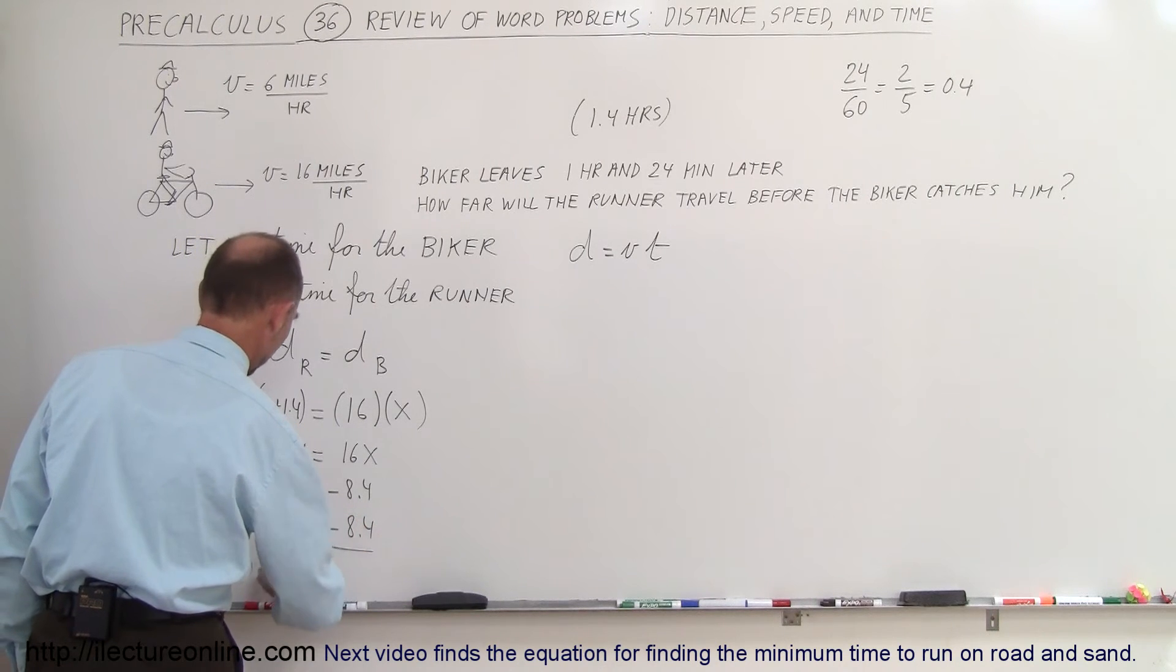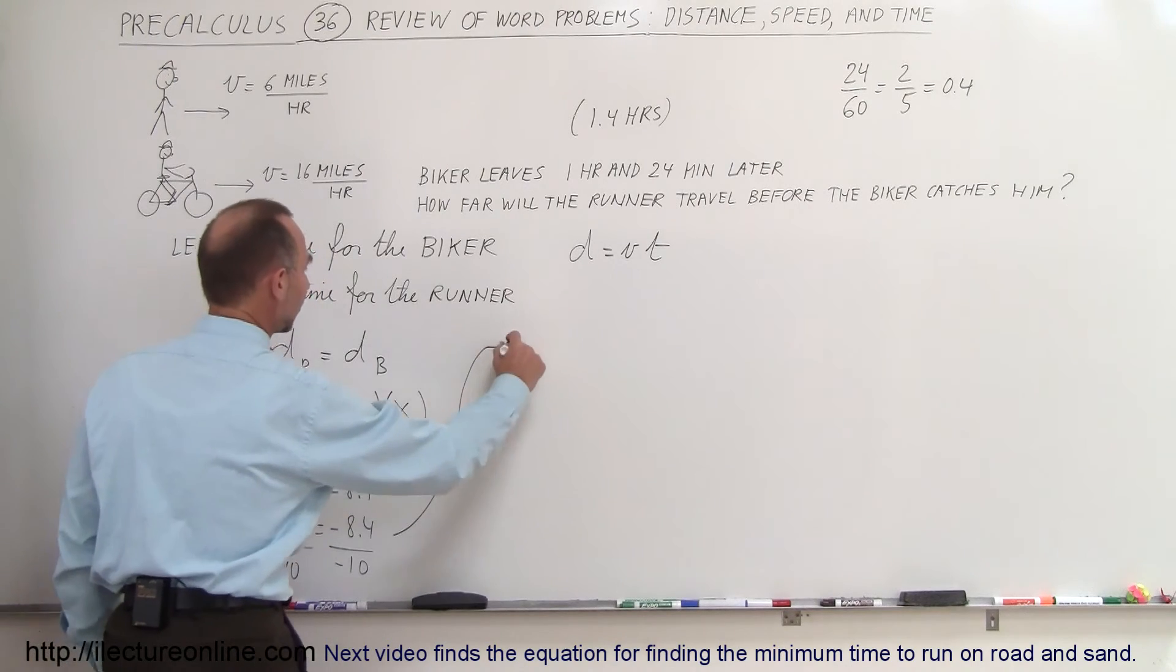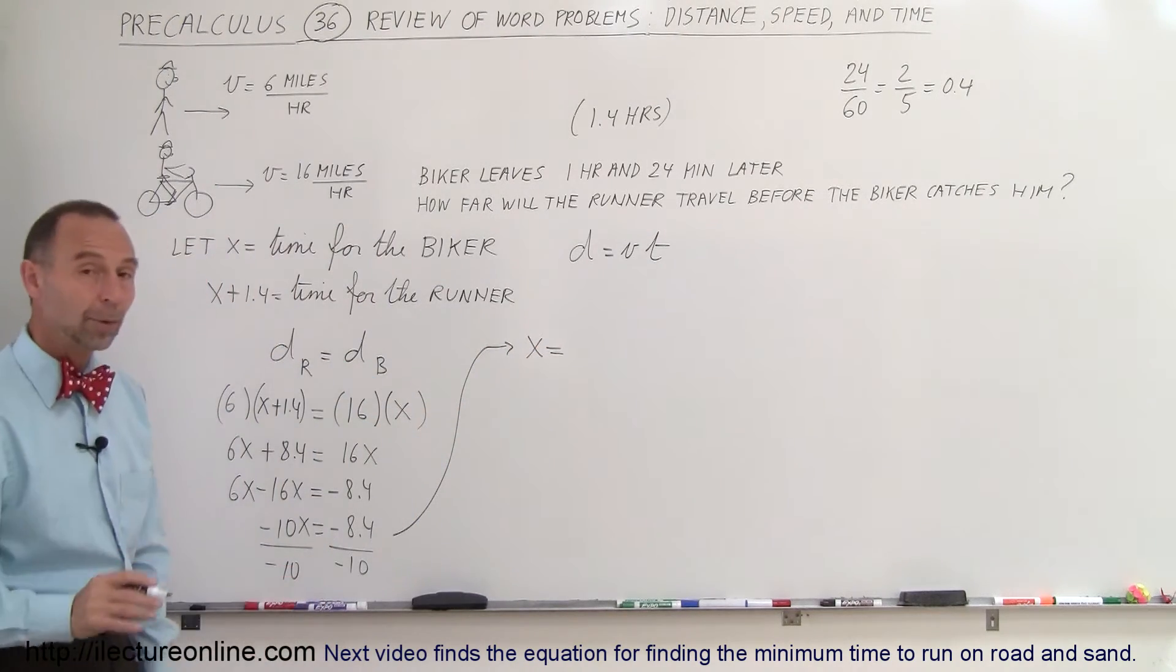So minus 10x equals minus 8.4, dividing both sides by the coefficient, minus 10. That gives us x is equal to 0.84.